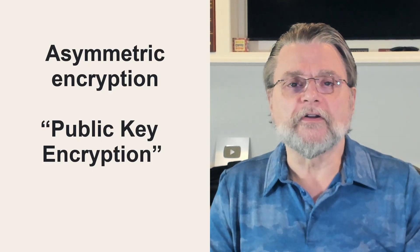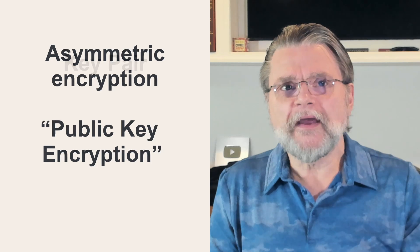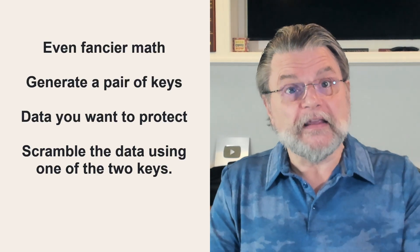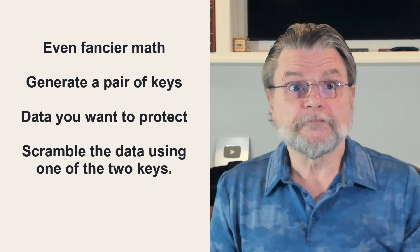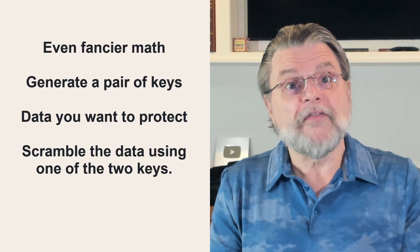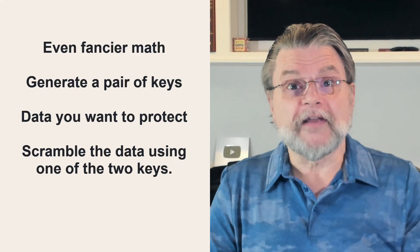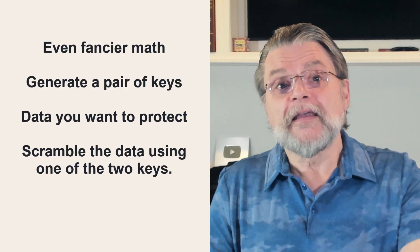Public key, or asymmetric encryption, refers to using a key pair — one to encrypt the data and the other to decrypt it. Each key is just another large number, but they have a special relationship: data encrypted by one can be decrypted only by the other. Using even fancier math, you generate a pair of these keys. You scramble your data using one of the two keys, and the result can't be unscrambled without knowing the other key.